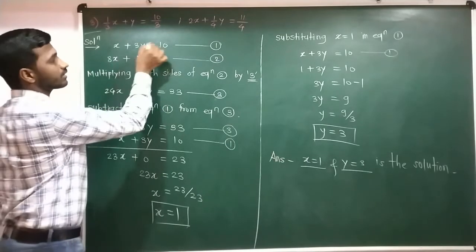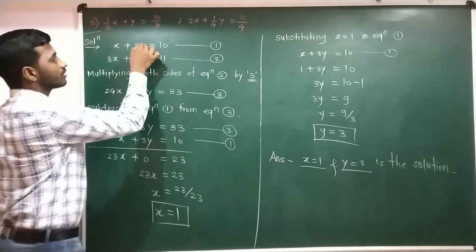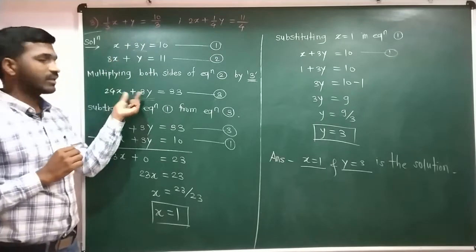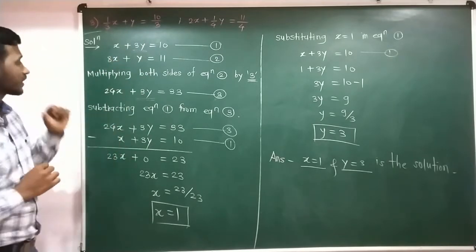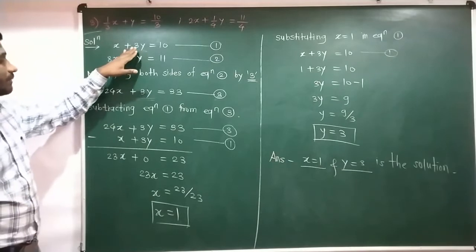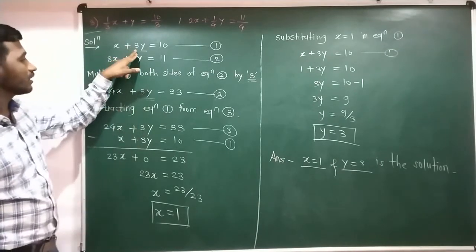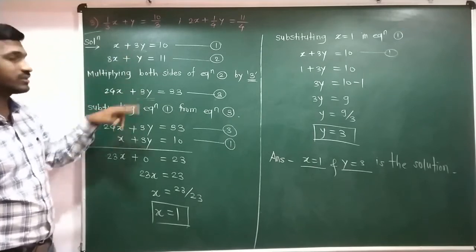Equation 1 has 3y plus 3y, meaning y coefficients are the same. When you apply the elimination, then y cancels. When y cancels, you apply subtraction to the two equations.